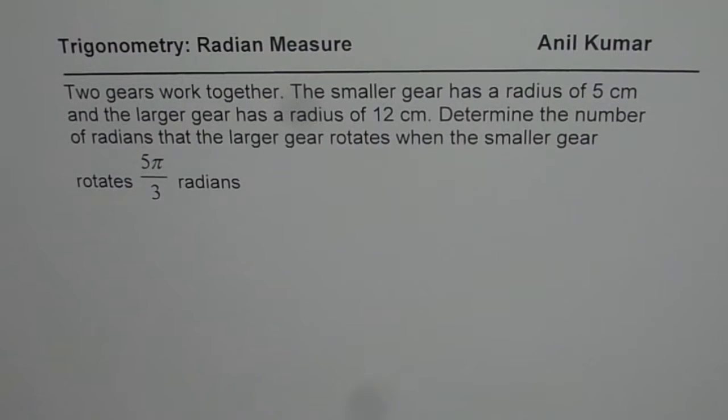The smaller gear has a radius of 5 cm and the larger gear has a radius of 12 cm. Determine the number of radians that the larger gear rotates when the smaller gear rotates 5π/3 radians.